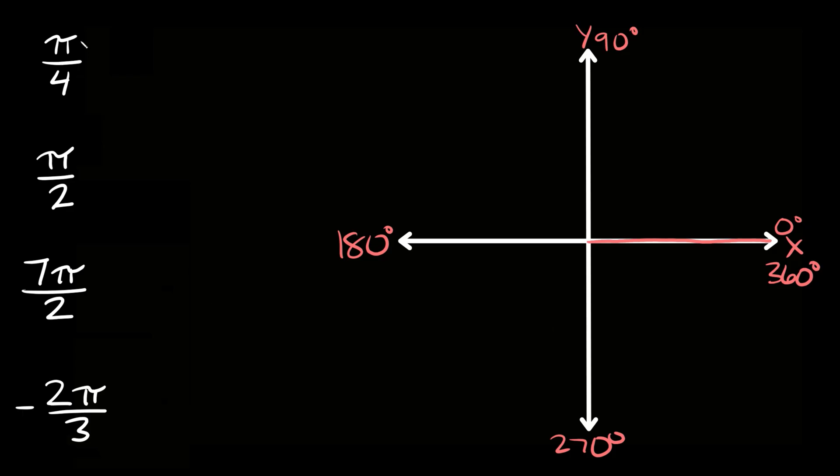So in order to figure out which quadrant this radian is in, the easiest way would be to convert it to degrees. And in order to do that you simply multiply the radian by 180 over π.